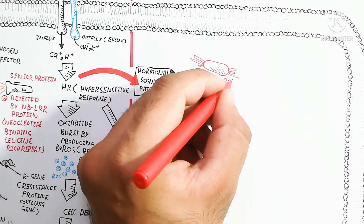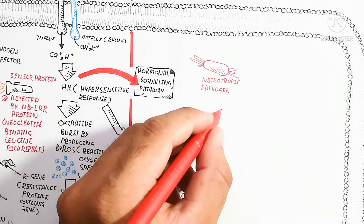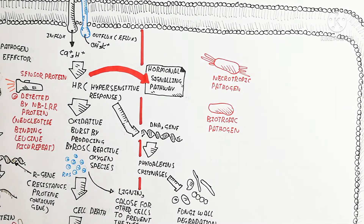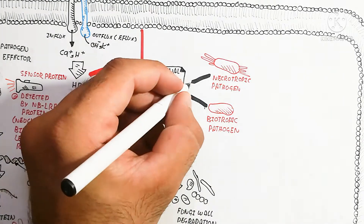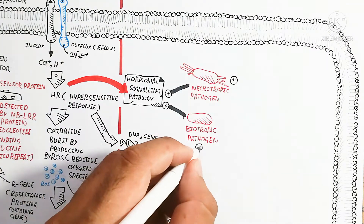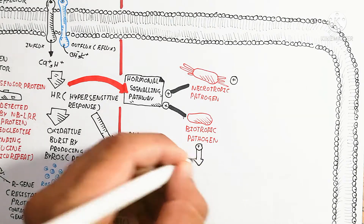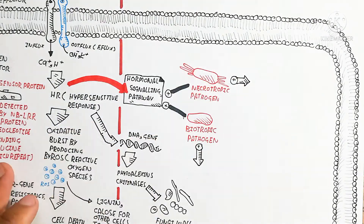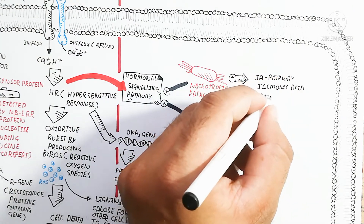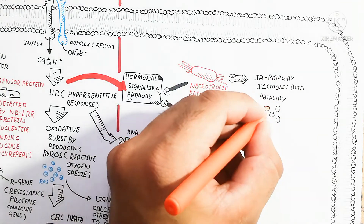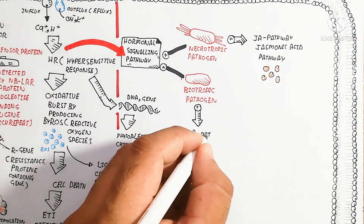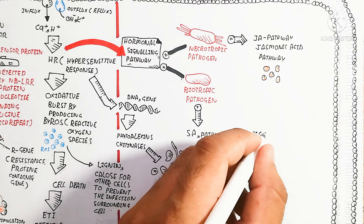Two types of pathogens: necrotrophic pathogens trigger the jasmonic acid pathway, which produces jasmonic acid — a hormonal signaling pathway that sends signals to the plant DNA. Biotrophic pathogens trigger the salicylic acid pathway, producing salicylic acid.